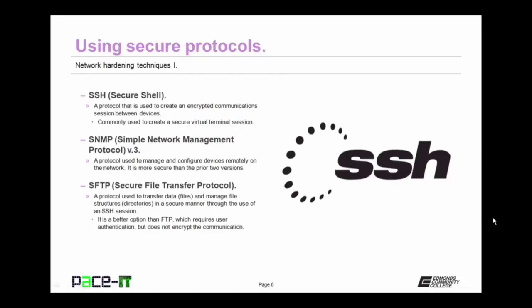First up is Secure Shell, or SSH. It's a protocol used to create an encrypted communications session between devices. It's commonly used to create a secure virtual terminal session and should be used in place of Telnet whenever possible. Then there's SNMP version 3, Simple Network Management Protocol version 3. It's a protocol used to manage and configure devices remotely on the network. It's more secure than the prior two versions because it supports encryption.